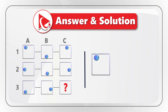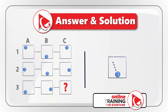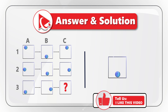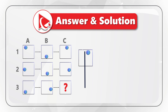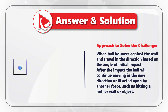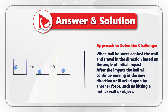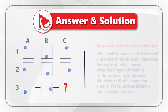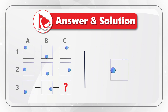Let's start at object A1, where the ball is in the upper left corner and moves downward toward the middle of the bottom section — which is exactly where we see it in B1. Then the ball bounces and moves upward, as seen in C1. When the ball bounces against a wall, it travels in the direction based on the angle of initial impact, continuing in that direction until hitting another wall or object.